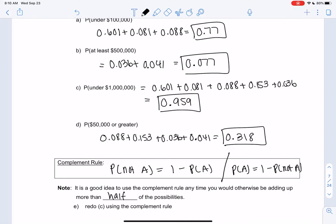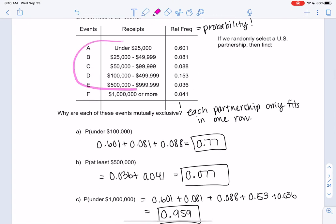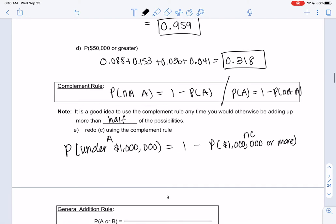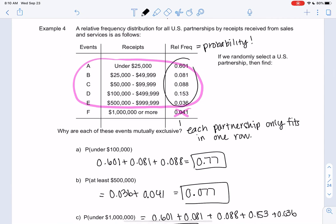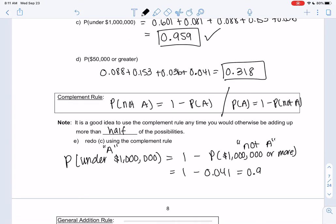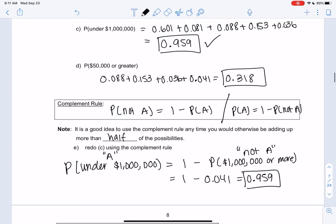This is a really nice rule when you're adding up more than half of the possibilities. In example C for under a million, remember we were adding up all of these. Some of you may have noticed we could have just subtracted a million or more. So the probability of under a million would be the same as 1 minus the probability of a million or more. This would be A and this would be not A—it's the opposite. So then we could have just done 1 minus 0.041. Visually I think it makes sense. We added up all of these—why couldn't I just do 1 minus that one? And if you do that, you should get 959 again. So it's a little bit faster than what we did in part C, but they both work. Your choice.